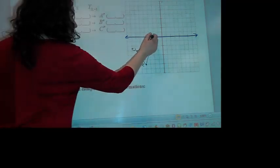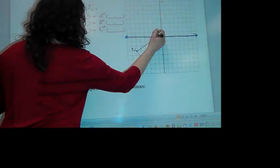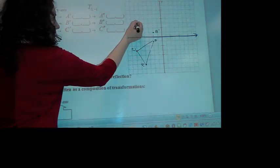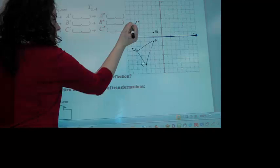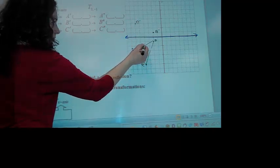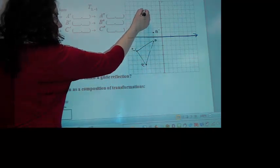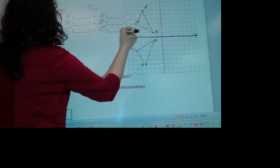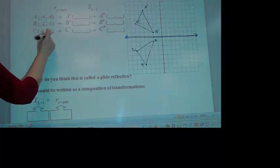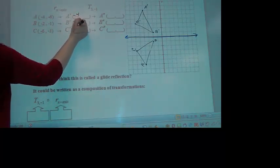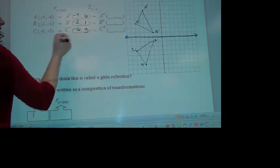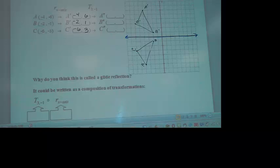So it looks like B is one space away there. It should be one space above here. That's where B prime is going to be. Do you remember what the rule is? X stays the same when we reflect over the x-axis. And all these should change from negative to positive.